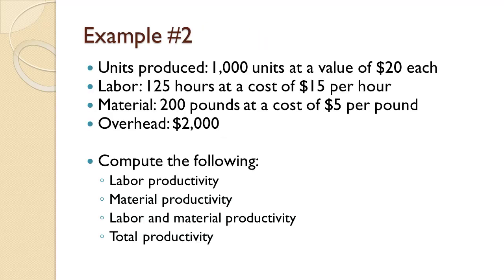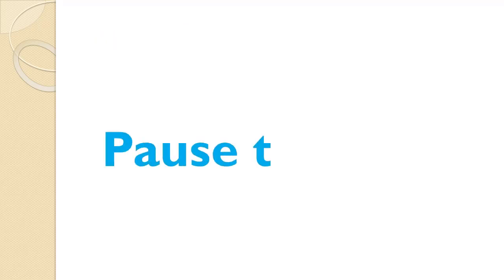In this next example, 1,000 units were produced and they have a value of $20 each. Production used 125 labor hours at a cost of $15 per hour. Production used 200 pounds of material at a cost of $5 per pound. Finally, overhead was estimated to be $2,000. We wish to compute labor and material single factor productivity measures, the labor and material multi-factor productivity measure, and total productivity. Since you've seen an example already, let me suggest that you pause the video and try to work this problem on your own.